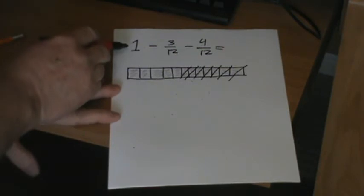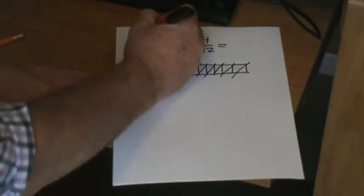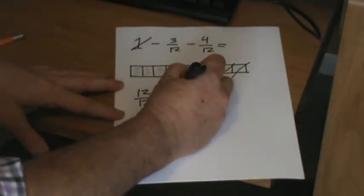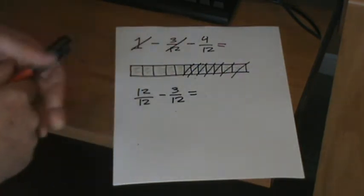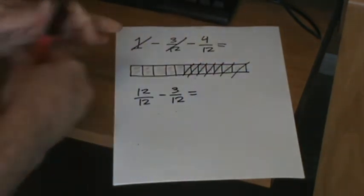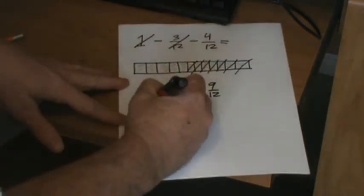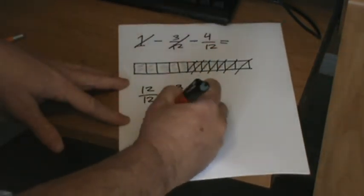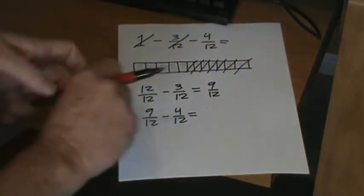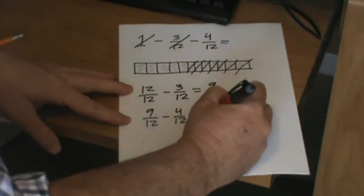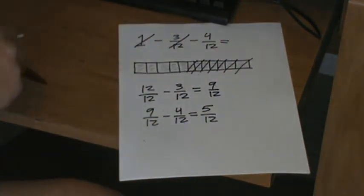How we're going to do it another way is we're going to take that 1 and make it 12/12. Then we're going to subtract 3/12. 12 - 3, 12, 11, 10, 9. So we have 9/12. Then we're going to take our 9/12 and minus 4/12. 9 - 4, 8, 7, 6, 5. We have 5/12 here and we have 5/12 up there. So two different ways to approach that problem.